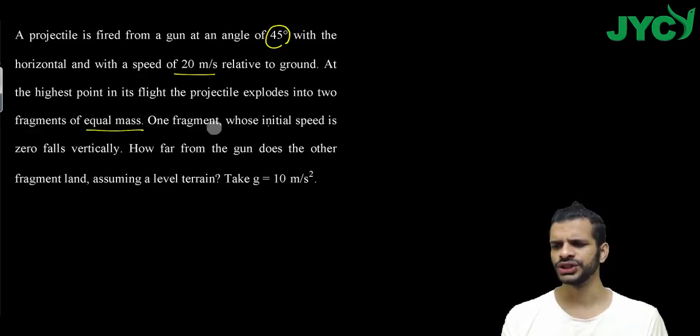One fragment whose initial speed is zero falls vertically. Now, this question is easy because basically one fragment falls vertically, downward, directly. So how far from the gun does the other fragment land? Assuming a level terrain. Take g = 10 meter per second square.